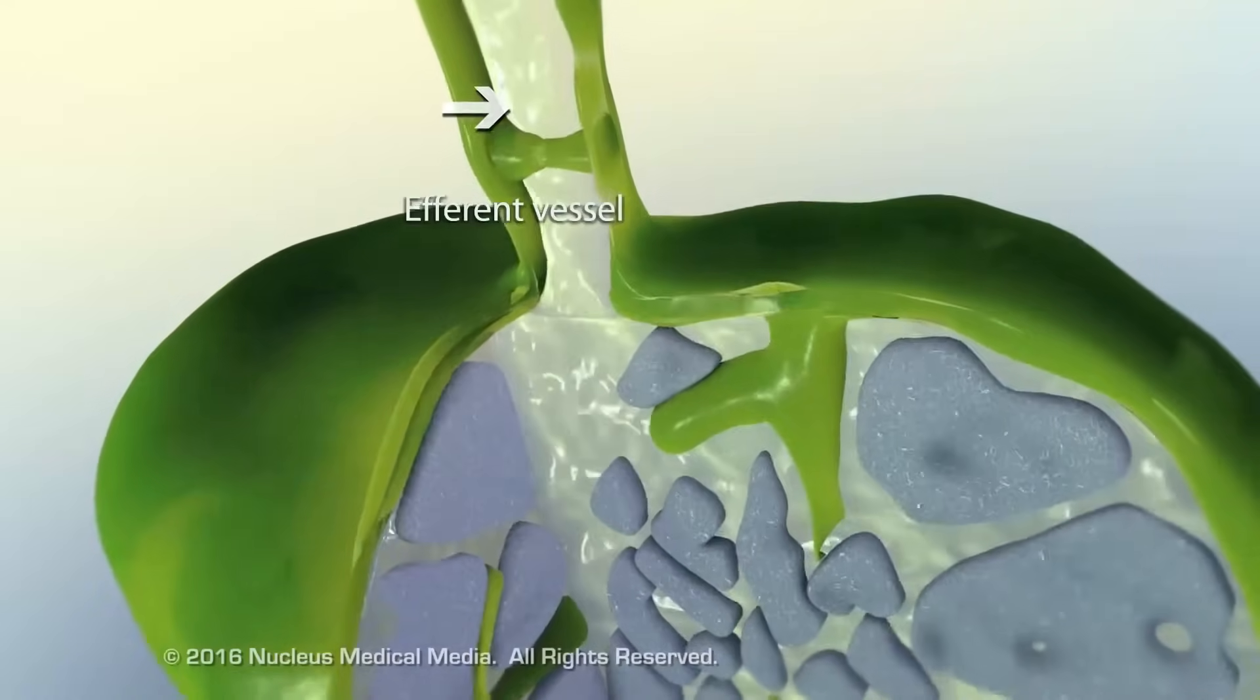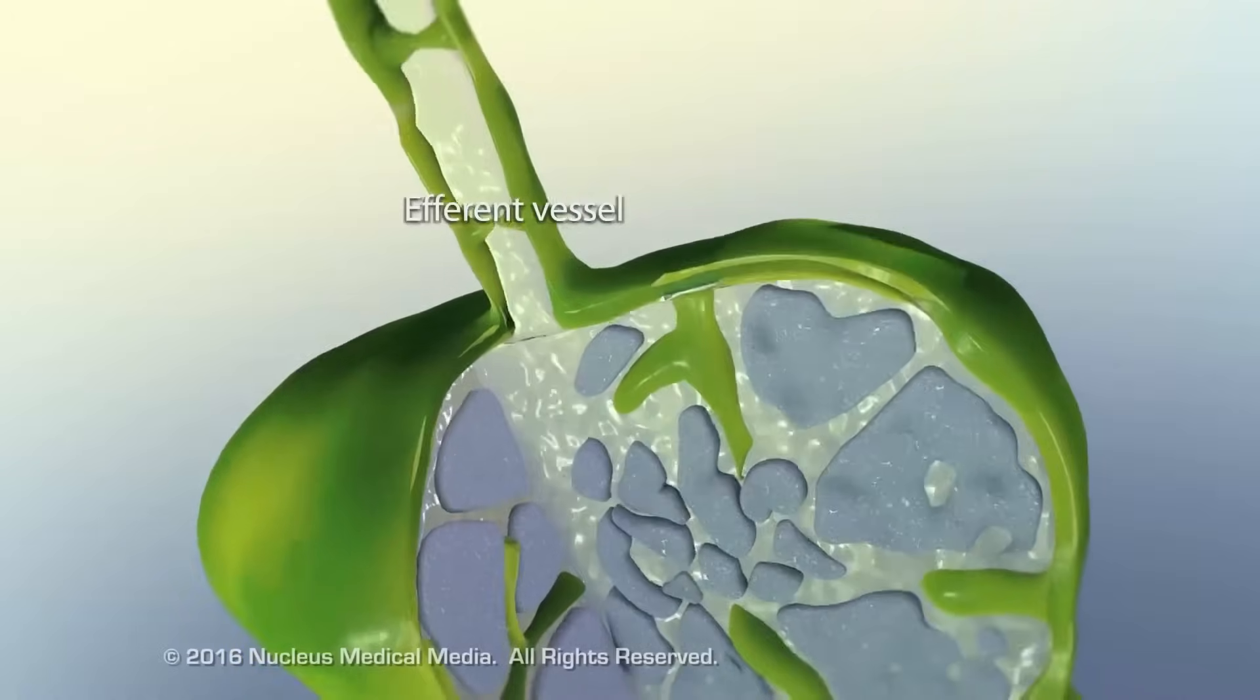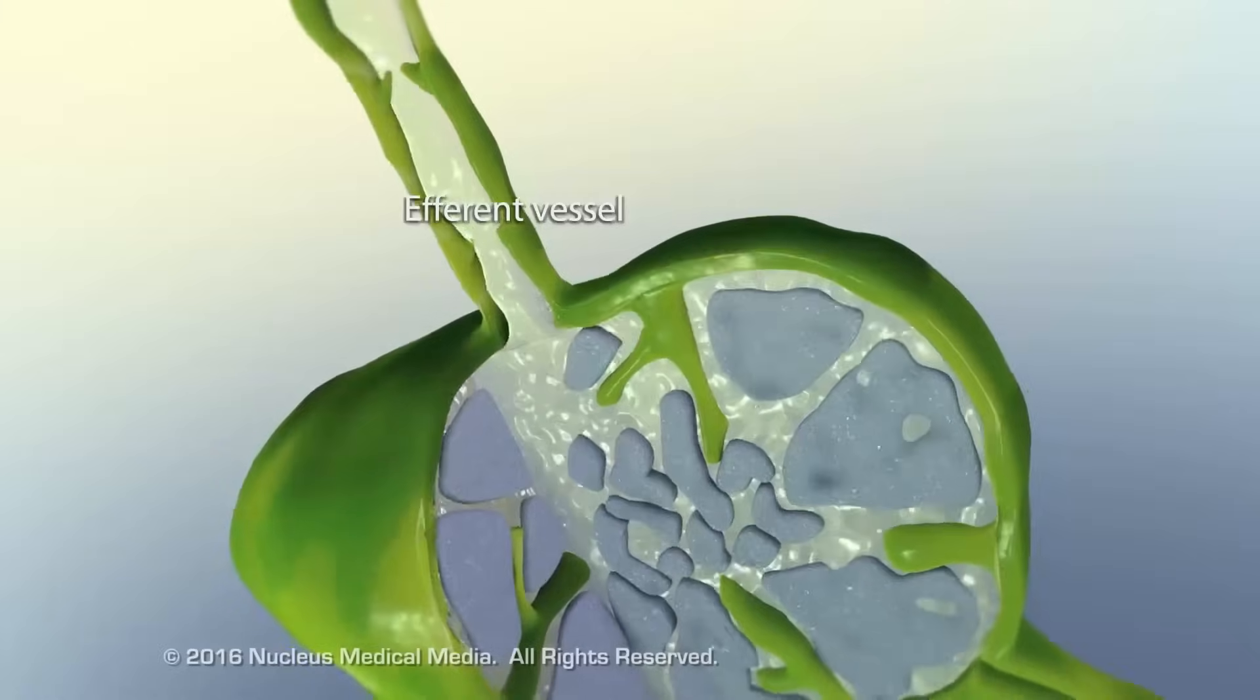The cleansed lymph, consisting mainly of water, protein, and lymphocytes, exits the node via an efferent collecting vessel.